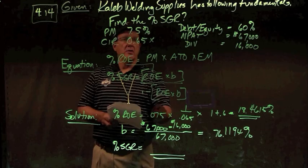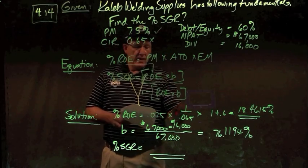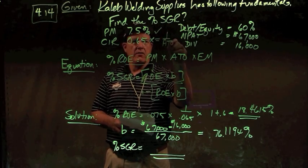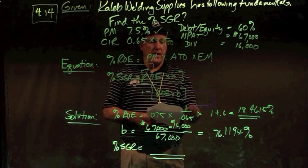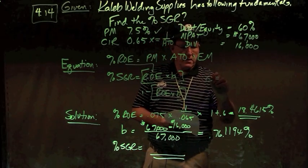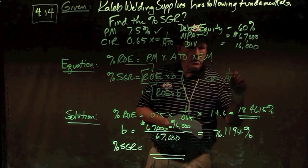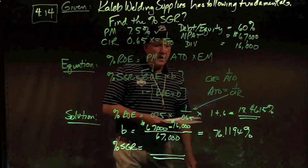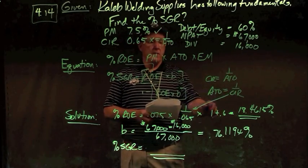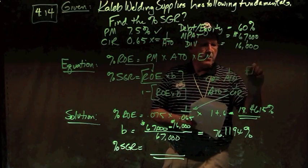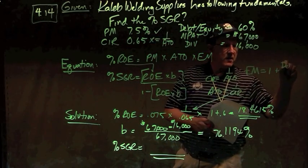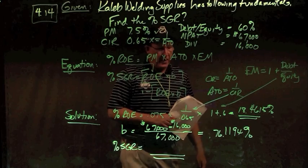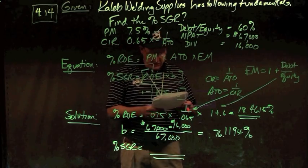So ROE is profit margin of 0.075 times 1 over 0.065. Capital intensity ratio is equal to 1 over asset turnover. So the inverse is true. So I take 1 over 0.065. So CIR equals 1 over ATO, and ATO equals 1 over CIR. So that's how I figure out asset turnover, and then equity multiplier is 1 plus debt-to-equity ratio. Equity multiplier equals 1 plus debt-to-equity, and that's how I calculated equity multiplier. With that, I get an ROE of 18.4615%.